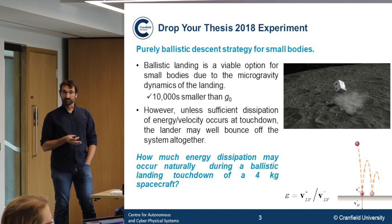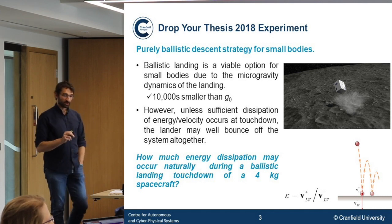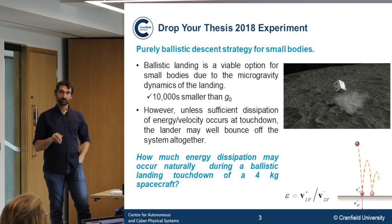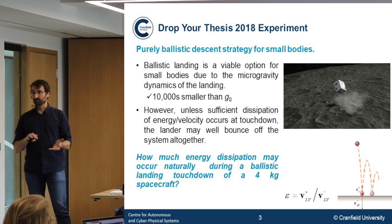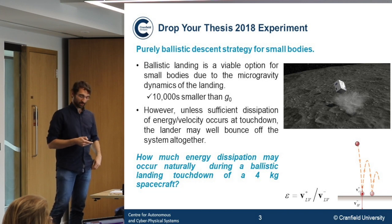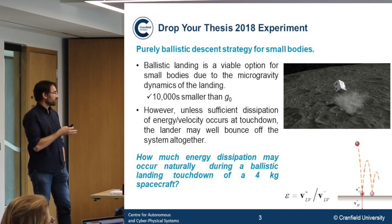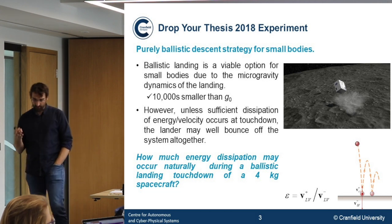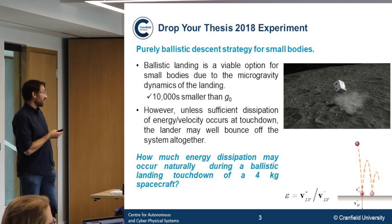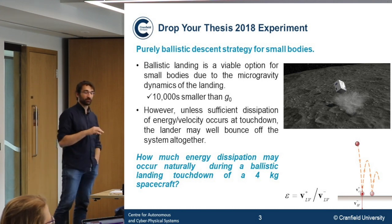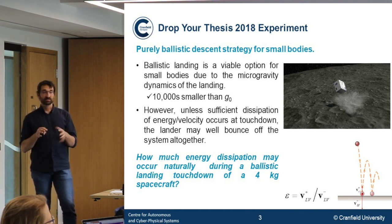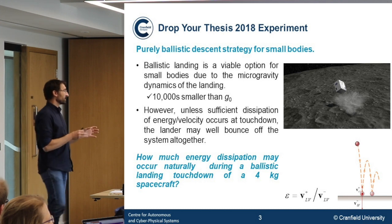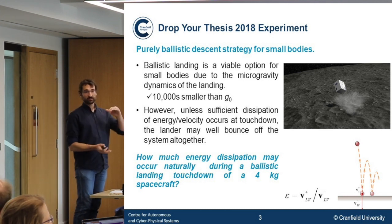Purely ballistic descent trajectories are feasible for small bodies. The problem is that at touchdown, if you don't dissipate sufficient energy, you will bounce out of the system and might not come back to the surface — you might end up in orbit or on an escape trajectory. From this we came up with the science and engineering question: how much energy dissipation might occur naturally on an asteroid during a ballistic landing of a small body?